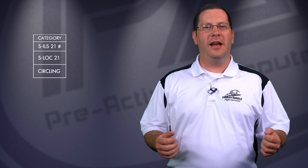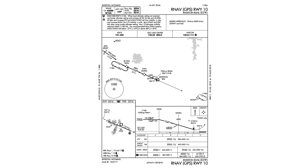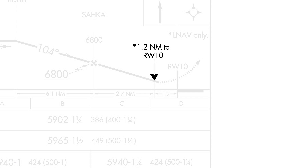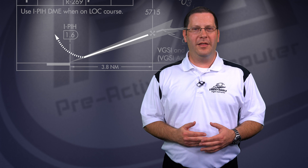On some non-precision approaches, a visual descent point is shown to assist pilots in the transition to look for the runway. This point depicts where a normal descent to the runway touchdown point may be commenced, provided certain criteria are met, helping maintain a stabilized approach. After the missed approach point, the dark thick line changes to a dashed line, indicating the missed approach segment of the approach. To review the full list of symbols, reference the legend of the TPP or the FAA's Aeronautical Chart User Guide.